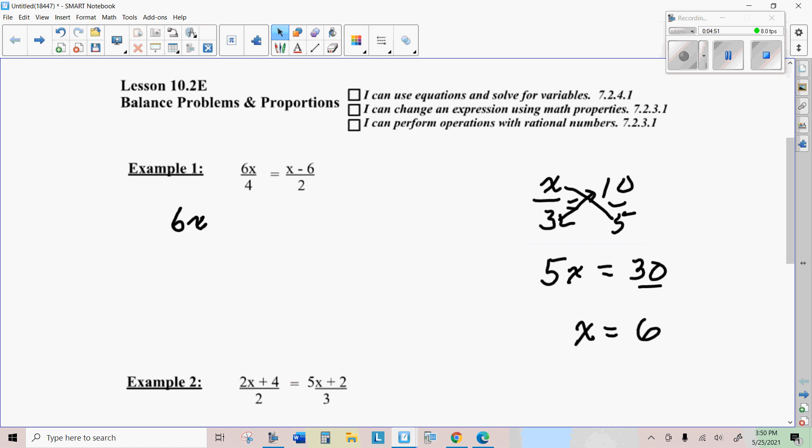6X times 2. That's one cross product going this way. And I'm going to go this way. Make sure you use parentheses, because we have to multiply 4 times the quantity X minus 6. We're going to have to get rid of those parentheses. So I get 4X minus 24.